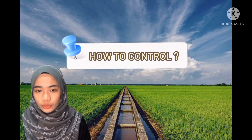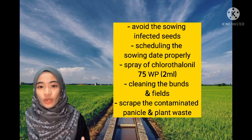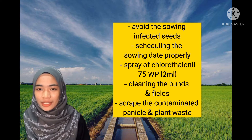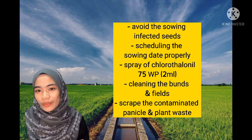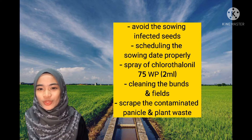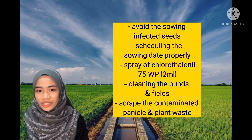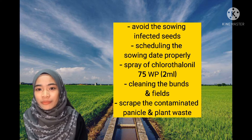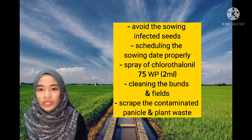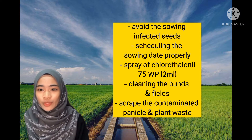How to control false smut? By avoiding the sowing of infected seed. By scheduling the sowing date properly to avoid damage caused during the flowering period. One has to spray chlorothalonil 75WP at the rate of 2ml per litre during the flowering stage. By cleaning the plants and fields regularly to avoid disease transmission through water. Upon processing, scrub the contaminated panicles and remove plant weeds.